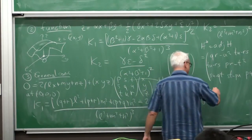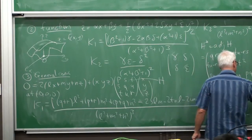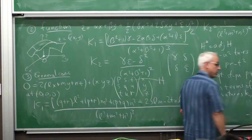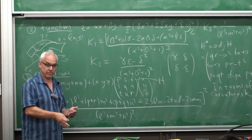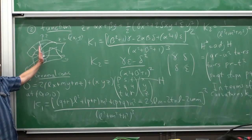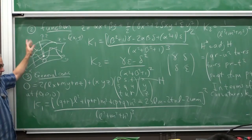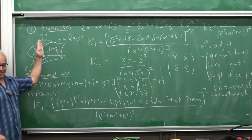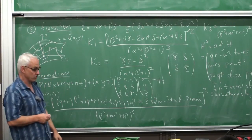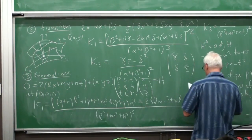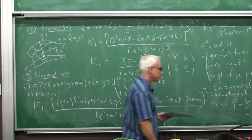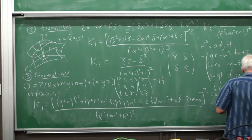In terms of the principal curvatures, little k₁ and little k₂, these are the curvatures of the normal sections. We take normal slices containing the axis — those give us curves with curvatures. As we vary the normal section, those curvatures vary, and there are two extreme values, the principal curvatures. They relate to K₁ and K₂ by: (k₁ + k₂)² = K₁ and k₁ · k₂ = K₂.